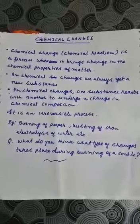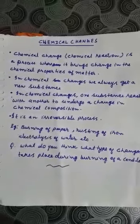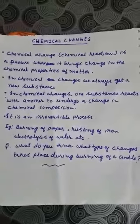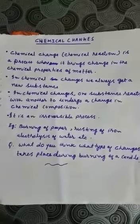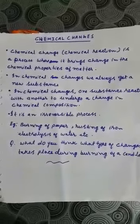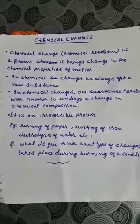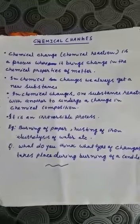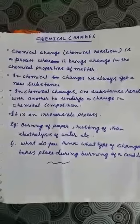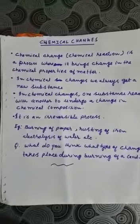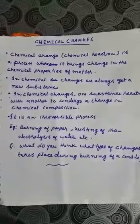What is a chemical change? A chemical change, also called a chemical reaction, is a process that brings a change in the chemical properties of matter. In physical change there is no change in chemical composition, but in chemical changes there will be a change in the chemical properties of the matter — meaning a new substance is formed after the reaction.